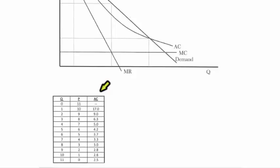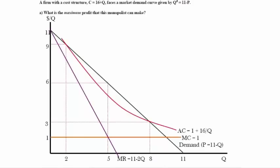Of course, it's possible to use a table and determine the average cost for every level of output. We plug the value of Q into the average cost equation. At Q equals 1, AC is 17. At Q equals 2, AC equals 9. At Q equals 4, AC equals 5. At Q equals 8, AC equals 3. We see the declining average cost. Our two break-even points are going to be at Q equals 2 and Q equals 8.